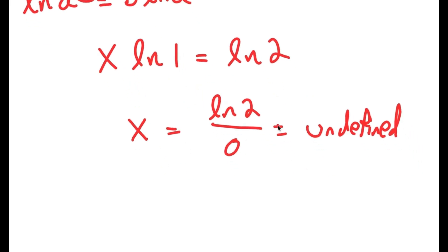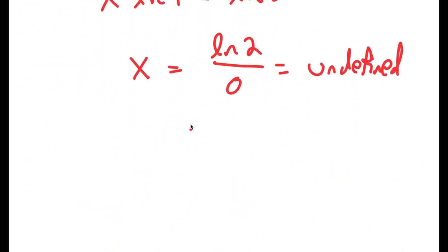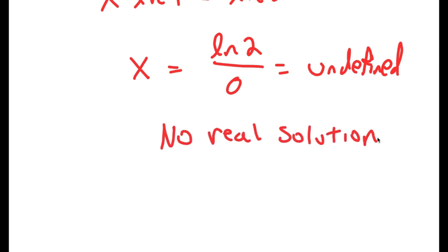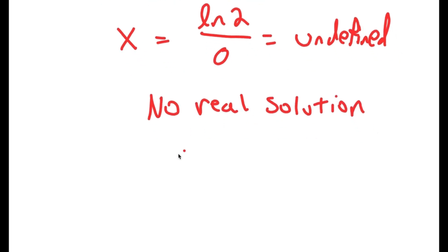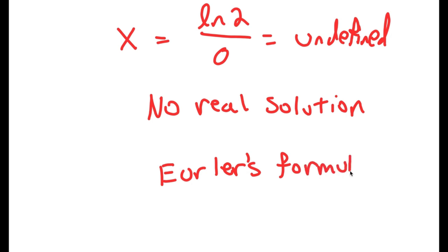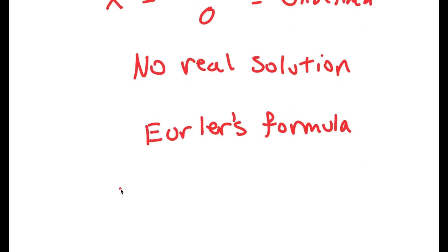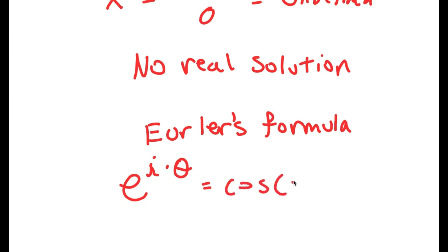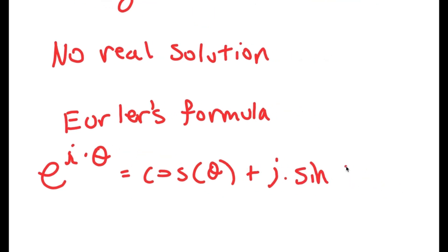So we know that this equation has no real solution. But it could still have imaginary solutions. So to actually solve this, I'm going to use something known as Euler's formula. Basically what this formula is, is if I have something in the form e to the power of i times theta,